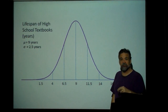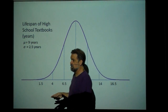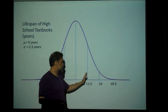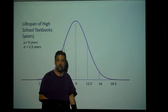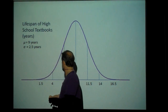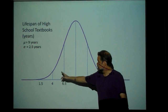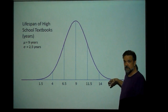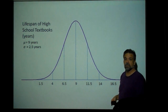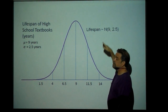Let's look at the lifespan of high school textbooks, which is approximately normally distributed with a mean of 9 years and a standard deviation of 2.5 years. This tells us that 16% of high school textbooks live longer than 11.5 years. It also tells us that approximately 2.5% live longer than 14 years. How? 95% of data lie within two standard deviations; that means 5% are on the outside, so 2.5% on each side — meaning 2.5% of all textbooks live longer than 14 years. We write: lifespan ~ N(9, 2.5).